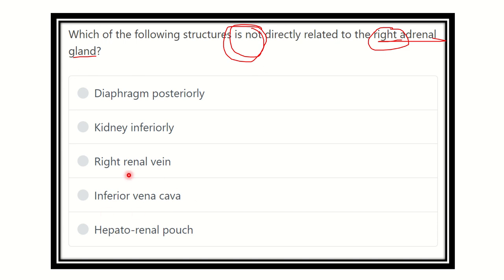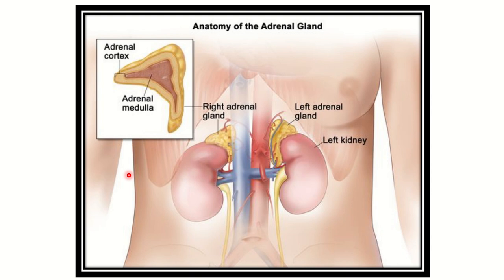We can see the adrenal gland lies just above the kidney on both the right and left sides. The right adrenal gland is located superior to the right kidney, so kidney inferiorly is confirmed as a correct relation. We can also see the adrenal gland is related to the abdominal aorta.